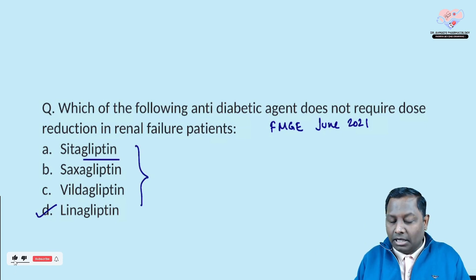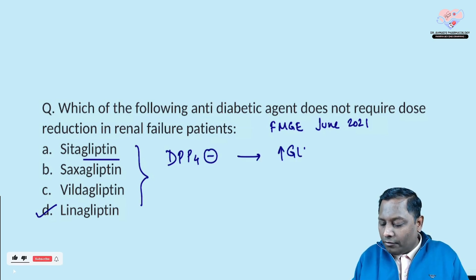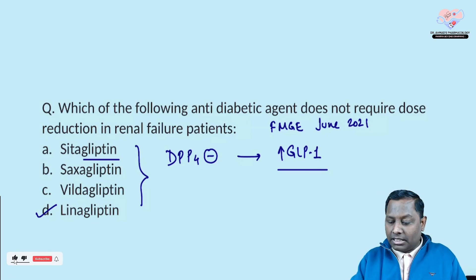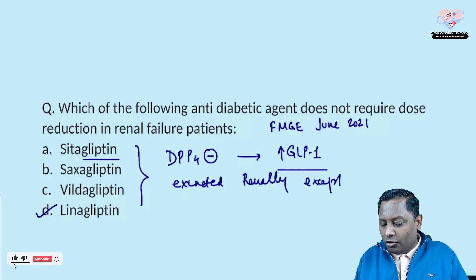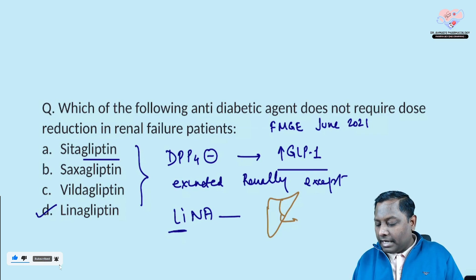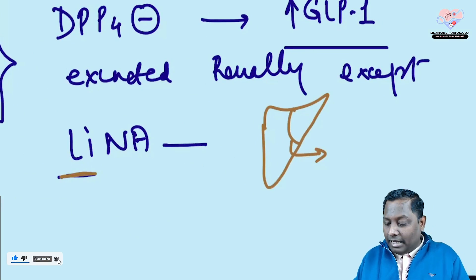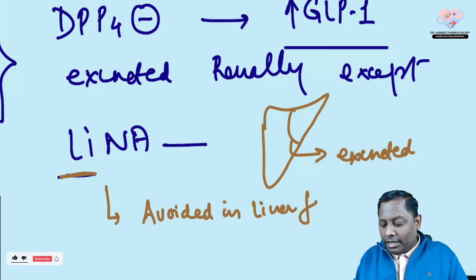Drugs ending with '-gliptin' are all DPP-4 inhibitors — dipeptidyl peptidase-4 inhibitors — that increase the level of GLP-1 (glucagon-like peptide-1), which has an insulinogenic property. All of them get excreted renally, with the exception of linagliptin. Linagliptin gets excreted through the liver, and therefore should be avoided in liver failure.